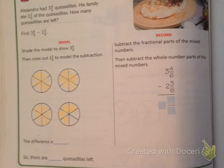Now it says then cross out 2 and 3/6 to model the subtraction. So cross out 2, and 3 of the 6. So I'm going to circle these 3 and cross them out. And then you see how many we're left with.